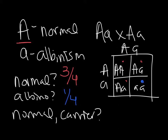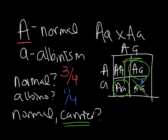Here's where you have to pay attention. They tell you you already have a normal child, so that means for sure your child does not have the little a, little a genotype. That leaves you with 3 boxes. You just have to figure out how many of those are carrier boxes — 2 of them. So you have a 2 out of 3 chance, if your kid's normal, that the child is a carrier.